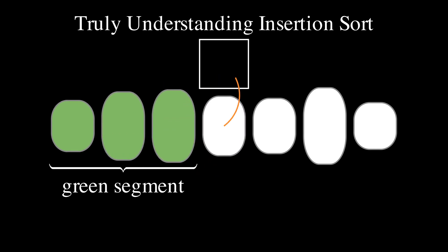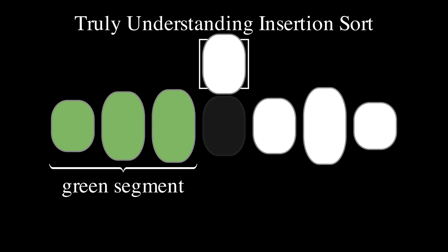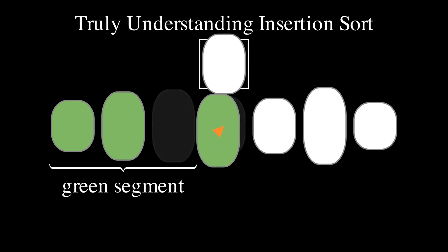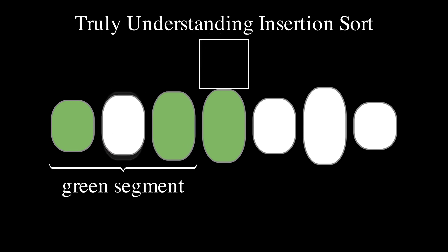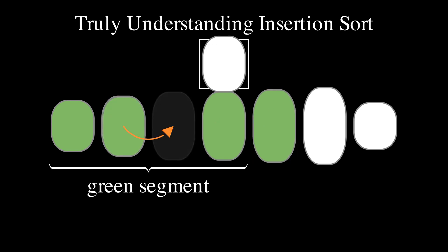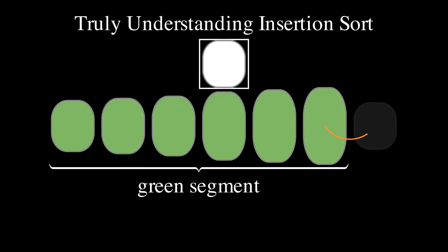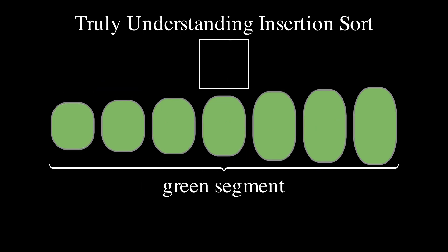To implement this, we first copy the current element into a temporary location. We shift by one position towards the right all elements in the green segment that are larger than the current element. We place the current element in the position freed by the last element shifted. This increases the length of the green segment by one element. We repeat this insertion process until the green segment encompasses all elements, and the entire array is therefore sorted.